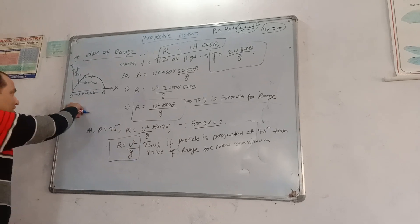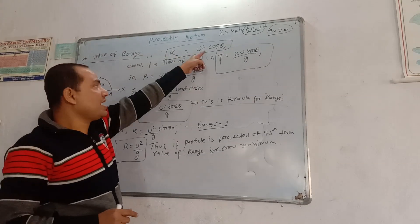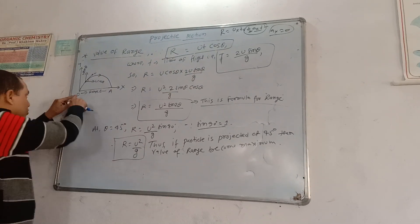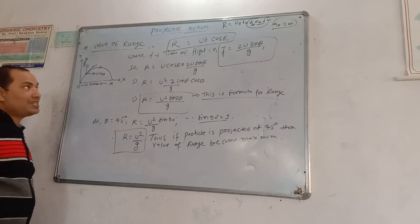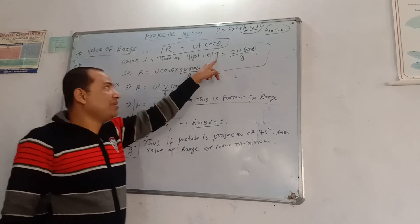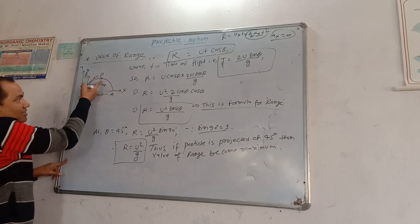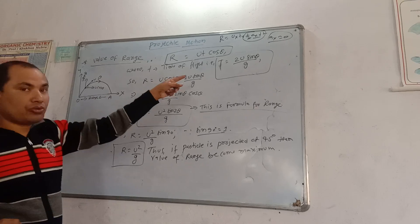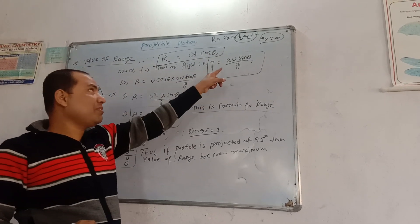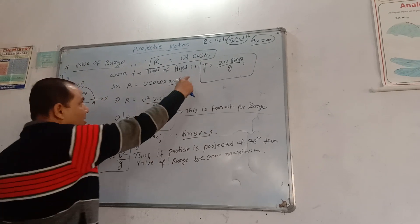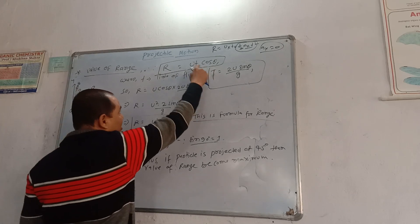Here t is the total time taken to reach from O to A — that is the time of flight. Time of flight equals time of ascent plus time of descent, that is t = t1 + t2. That is u·sin θ / g plus u·sin θ / g, which equals 2·u·sin θ / g. So time of flight is 2·u·sin θ / g.